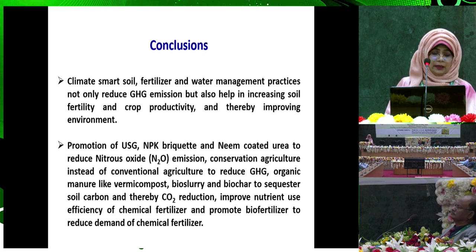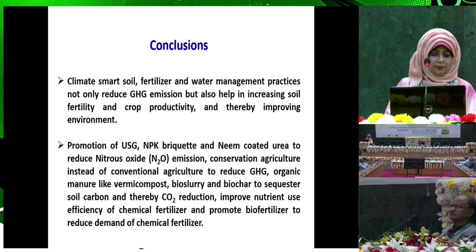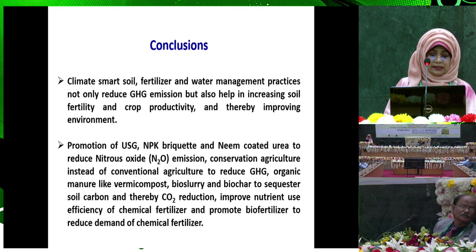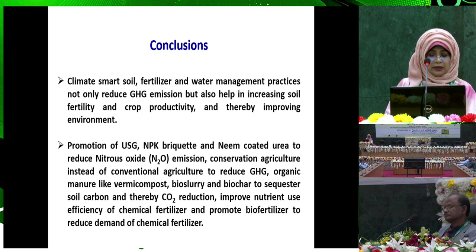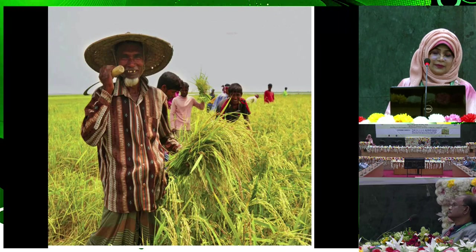In conclusion, climate smart soil fertilization and water management practices not only reduce greenhouse gas emissions but also help in increasing soil fertility and crop productivity, thereby improving the environment. Promotion of USG, NPK briquette, and neem-coated urea to reduce nitrous oxide emission; conservation agriculture instead of conventional agriculture to reduce GHG; organic manure like vermicompost, biosolary, and biochar to sequester soil carbon and reduce carbon dioxide; improved nutrient use efficiency of chemical fertilizer; and promotion of biofertilizer to reduce demand for chemical fertilizer are all recommended.